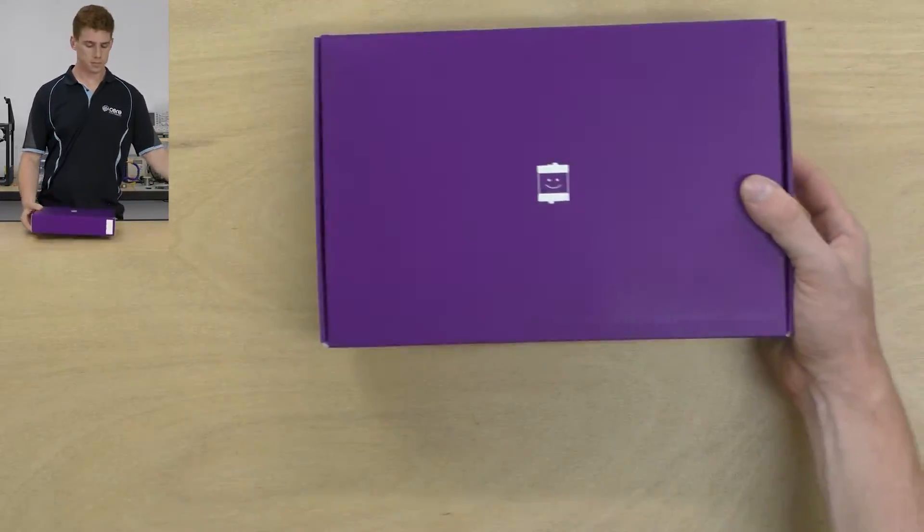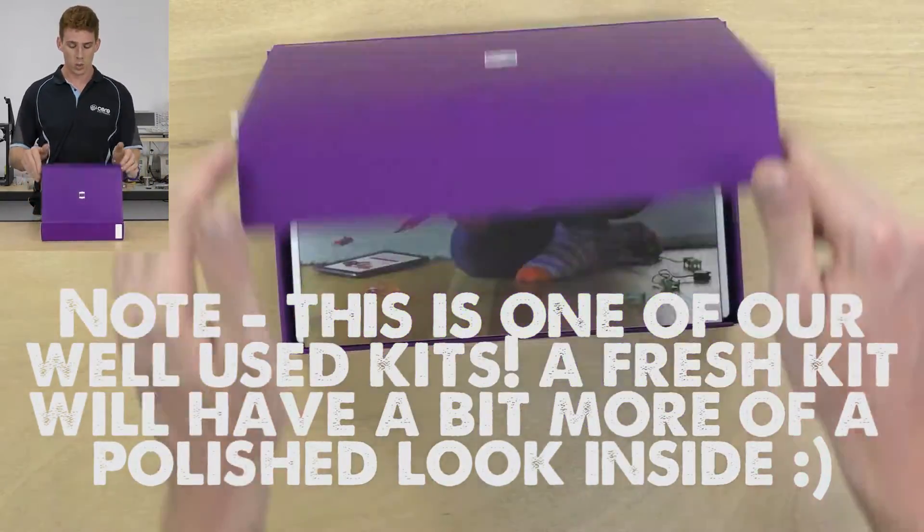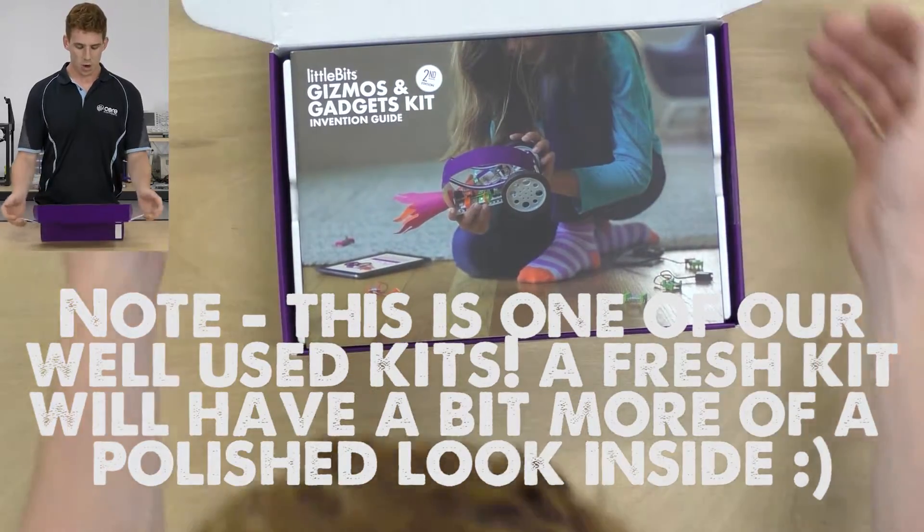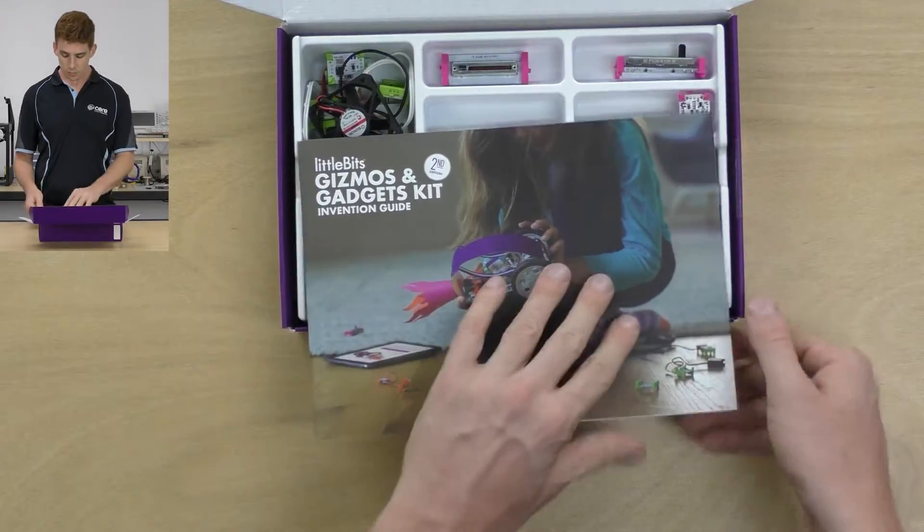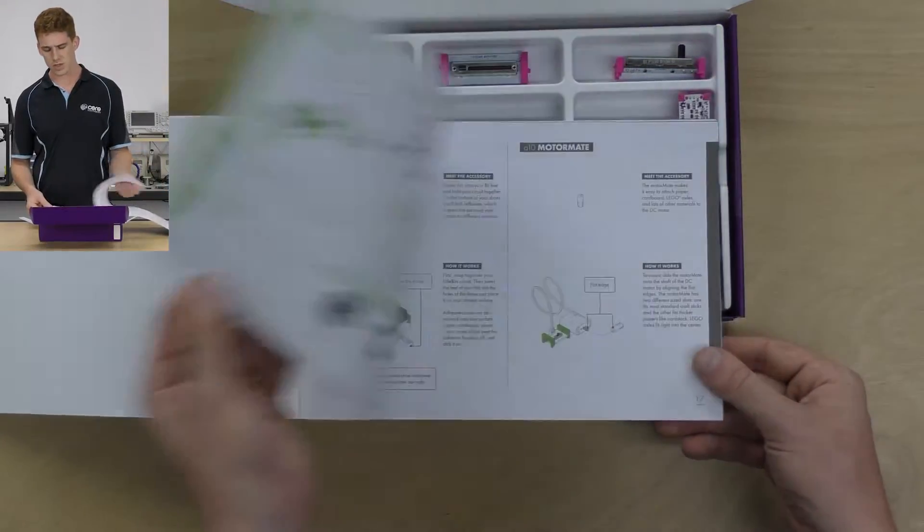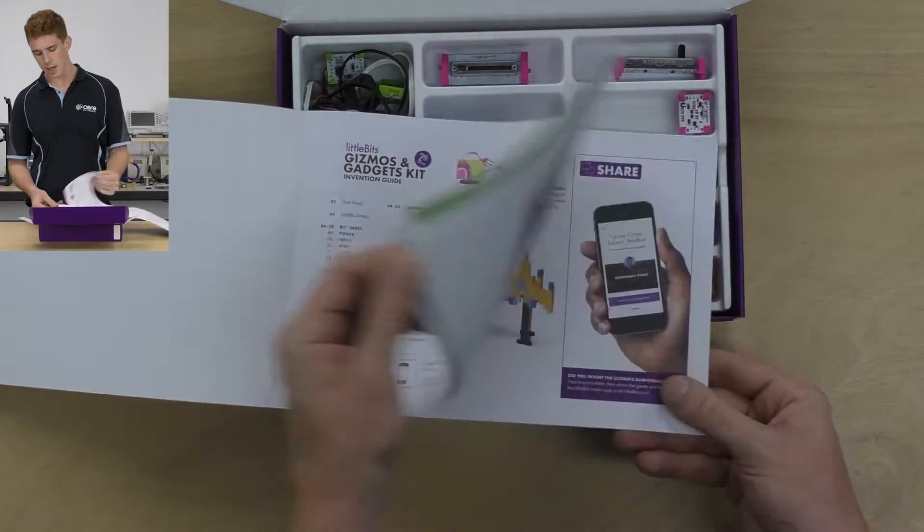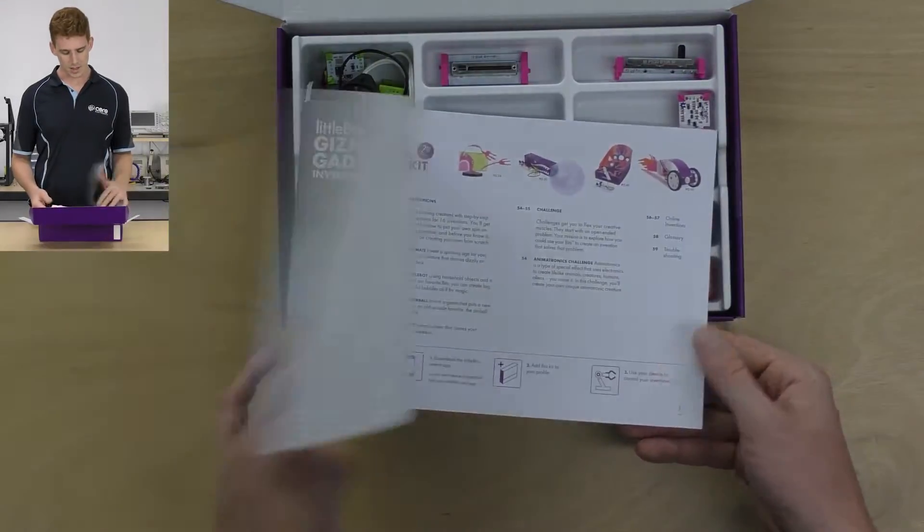We'll just open this up. I really like the way Little Bits packages all their kits, it's really easy to throw them all back together when you need to. So you open this one up and you've got this book here. Now the book is really, really nicely put together. It's got a lot of illustrations, it's all in colour and it's very complete. So, we'll take a closer look at that in a second.